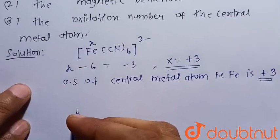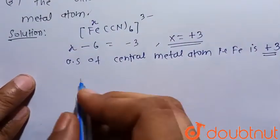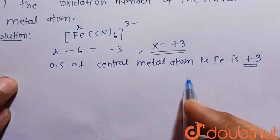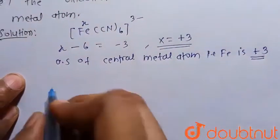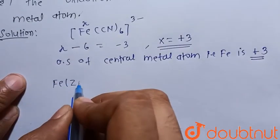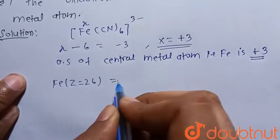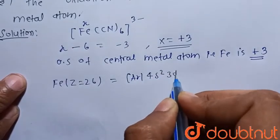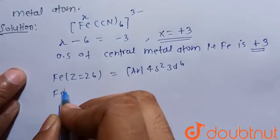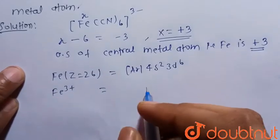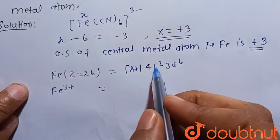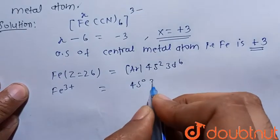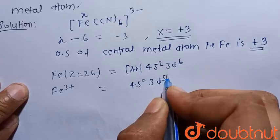Now we need to find the hybridization. The oxidation state of iron is +3. The atomic number of iron is 26, so its electronic configuration is [Ar] 4s² 3d⁶. For Fe³⁺, electrons are first removed from 4s, then from the d orbital, giving the configuration [Ar] 3d⁵ 4s⁰.